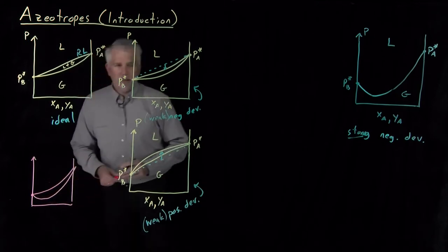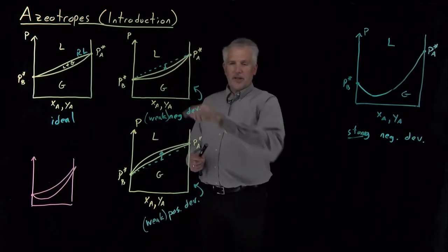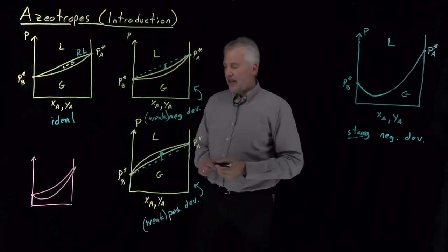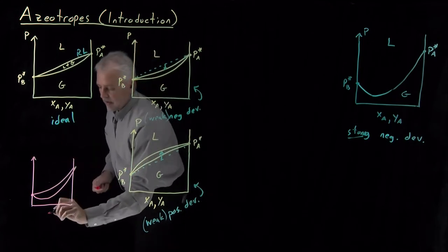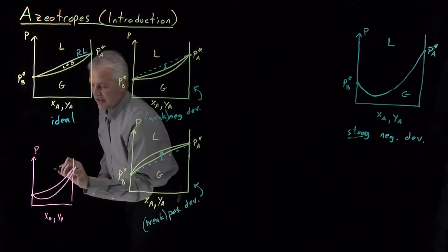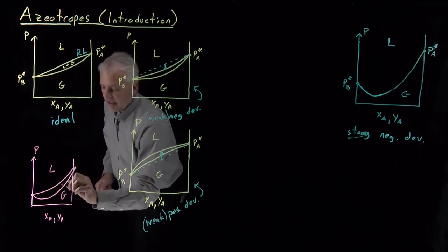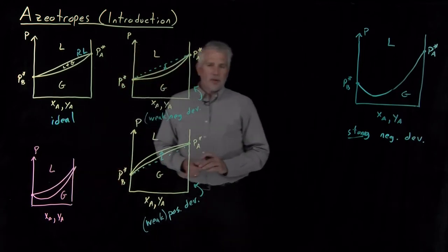as you might expect would be the case for some even stronger deviations from ideality in this case, think about what this means. We've got composition on this axis, pressure being measured on this axis, at high pressures we have a liquid, at low pressures we have a gas, in between we have a phase coexistence region.